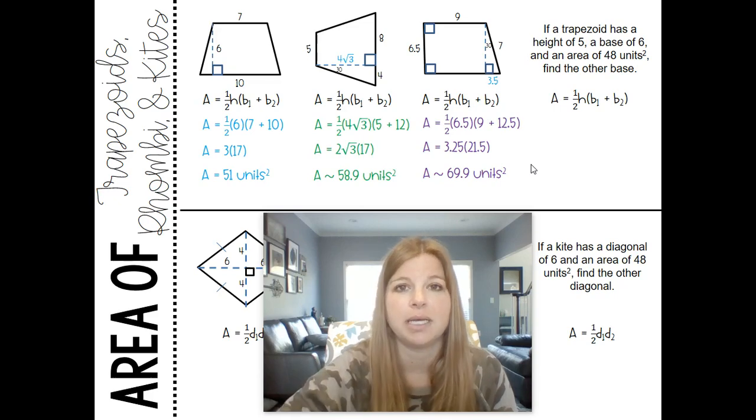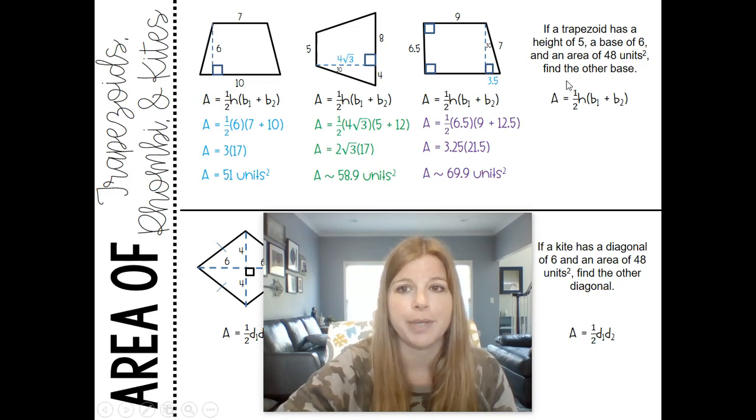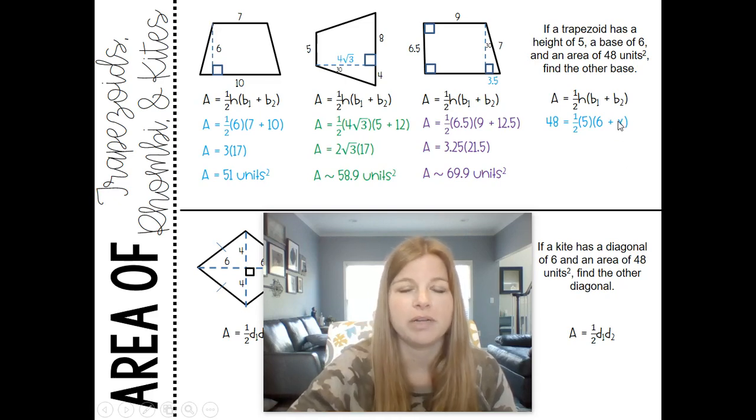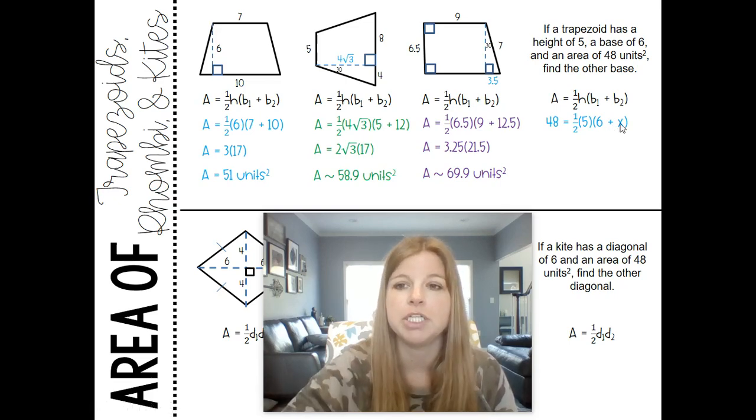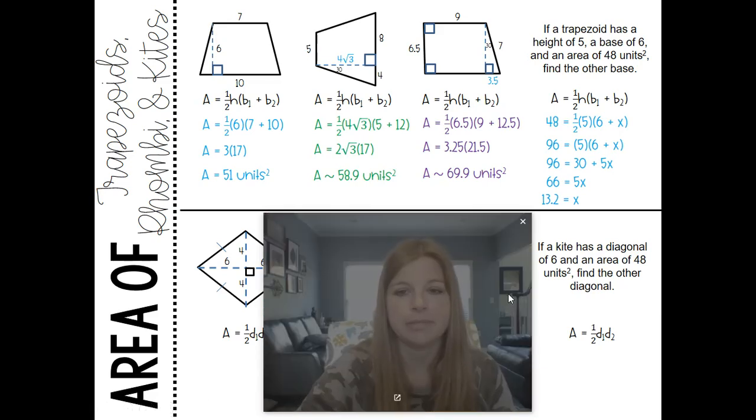This last one: if a trapezoid has a height of five, a base of six, and an area of 48 units squared, find the other base. So if I go ahead and I plug those numbers in, what I really am trying to find is one of the bases. And it doesn't matter where I put the six or the x, doesn't matter if I'm solving for base one or base two, it would mean the same thing. I'm gonna go ahead and multiply both sides by two in order to get rid of this half, I'm then going to distribute my five, and then simply solve for x. That's my answer.